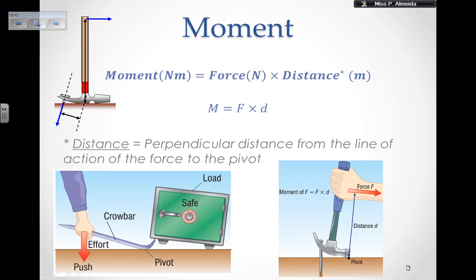So moment, by definition, moment is force times the distance. But this is not just any distance, it's going to be the perpendicular distance from the line of action of the force to the pivot. The pivot, by definition, is going to be the place where I'm going to have this turning effect. Because the moment is really a measure of the turning effect of a force. So I'm not pushing or pulling, I am making something turn around at an angle.